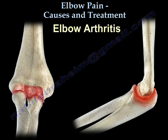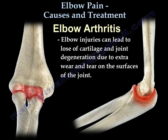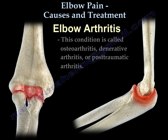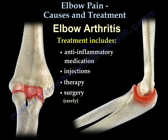Elbow arthritis occurs due to loss of cartilage and joint degeneration with loss of joint space. The patient has global pain, stiffness, and loss of motion. This condition has many names but is usually called osteoarthritis. Treatment includes non-steroidal anti-inflammatory medications, injection therapy, and rarely surgery.